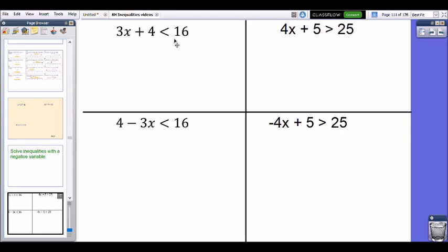So I've got 3x plus 4 is less than 16. So I'm solving the inequalities. So solve just means find x on its own. So what values could x be? Right, so I don't want 3x plus 4, I just want x. So that plus 4 has no reason to be there.